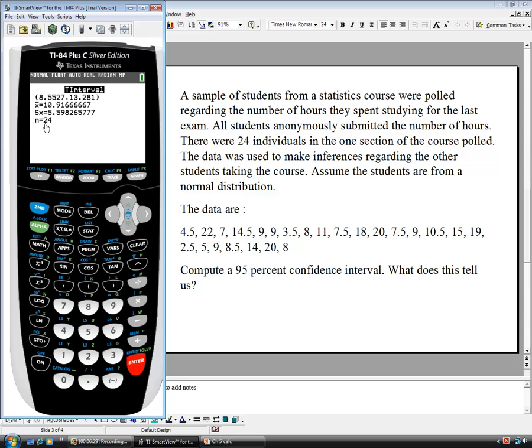The confidence interval, the T interval, we have N is 24. All the data points are there. The standard deviation came out to be about 5.6. And the X bar, the sample mean, was 10.92. We are 95% confident the true mean number of hours that students will spend studying for that particular exam was between 8.55 hours and 13.28 hours. That's how you would interpret that. We have a sample here that we're interpreting all people or all students taking that particular test.